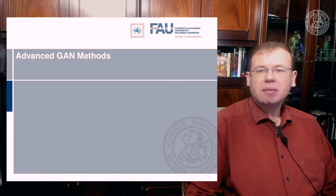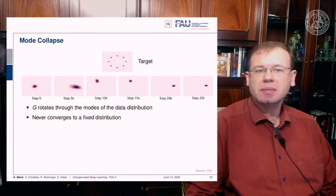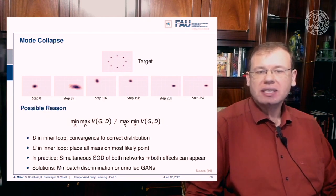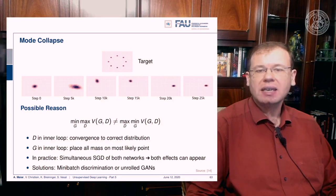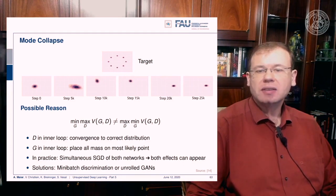Let's look at more advanced GAN methods. A typical problem is mode collapse. If the target distribution has several modes distributed in a ring over 2D space, the generator may rotate through the modes over 5,000 to 25,000 steps, jumping between them and never converging to a fixed distribution. A possible reason is that minimizing G over maximizing D is not equal to maximizing D over minimizing G: the discriminator converges to the correct distribution, but the generator places all mass on the most likely point. With simultaneous stochastic gradient descent, both effects can appear.